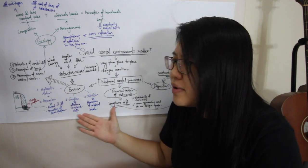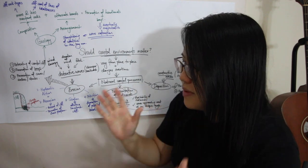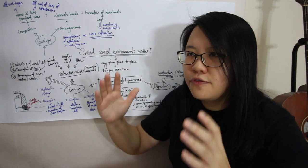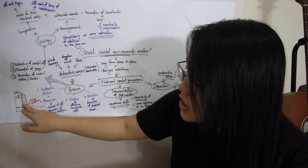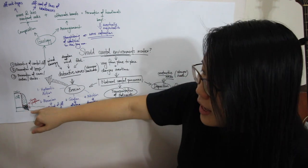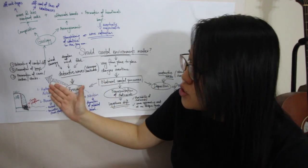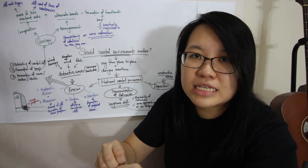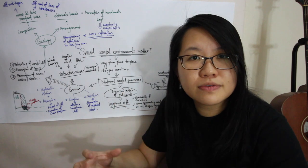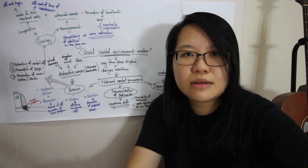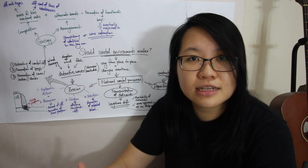These four erosional processes are primarily applicable to clifted coastlines — especially the first two: hydraulic action and abrasion. When we observe a clifted coastline being eroded, it's not the entire cliff that's eroded by the waves but instead the bottom part — the base of the cliff. The waves attack the cliff up to the height of the high tide level. As waves approach the cliff, hydraulic action compresses air into the cracks, exerting greater pressure which weakens the rock. At the same time, waves carry sediments that smash onto the cliff surface, resulting in abrasion.